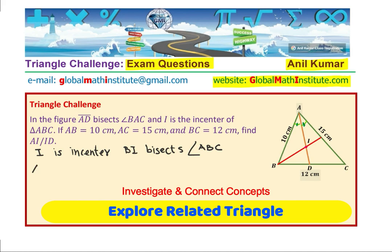Let us look into triangle ABD. In this particular triangle ABD, let BD be equal to X. We do not know what this is. So DC will be 12 minus X.